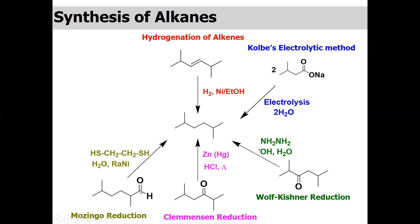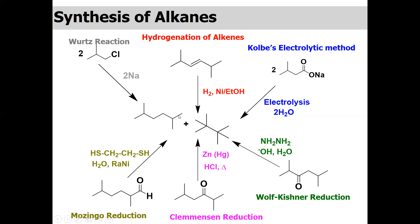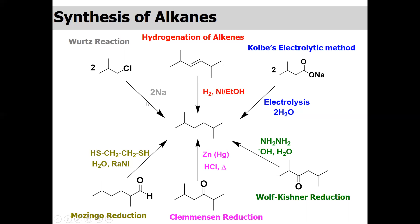For the Mozingo reduction, the carbonyl can be positioned at various locations and the two-step reaction converts it to the corresponding alkane. The last method is the Wurtz reaction using sodium metal. Like Kolbe's electrolytic method, the Wurtz reaction also produces a byproduct because it proceeds via a free radical mechanism. When the chlorine is eliminated by sodium, a free radical is generated that can stabilize as a three degree radical, so two products may form alongside the target 2,5-dimethylhexane.